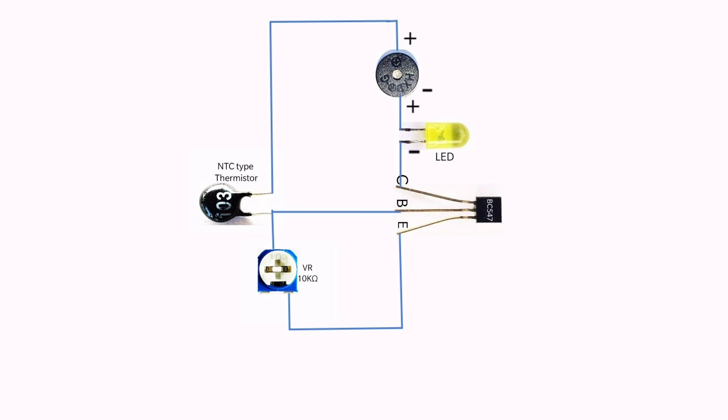Connect the battery positive terminal to the positive terminal of the buzzer and the negative battery terminal to the emitter of the transistor.